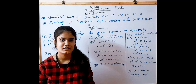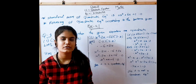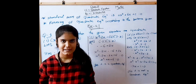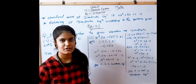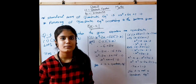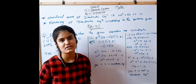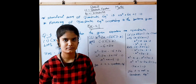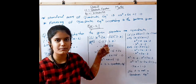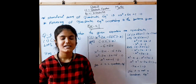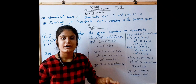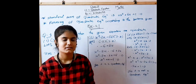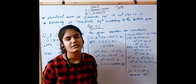Hello guys, welcome to my channel. Today we are going to study Chapter 4: Quadratic Equations, Exercise 4.1 introduction. The standard form of a quadratic equation is AX² + BX + C = 0. We have to form quadratic equations from given situations. Now, Exercise 4.1.